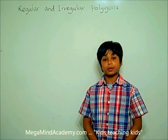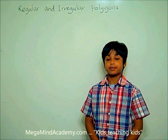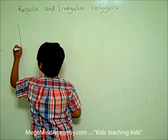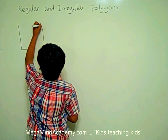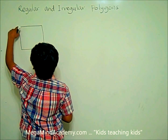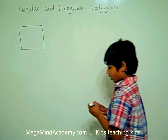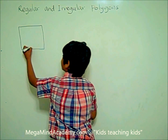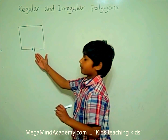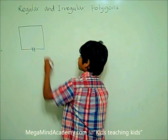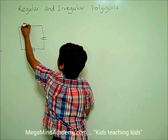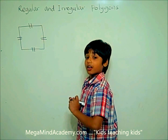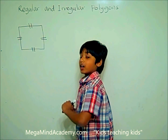Let's look at some examples of regular polygons. A square is an example of a regular polygon, because all its sides are the same length. This is the sign for same. And all its angles are the same — they are 90 degrees.